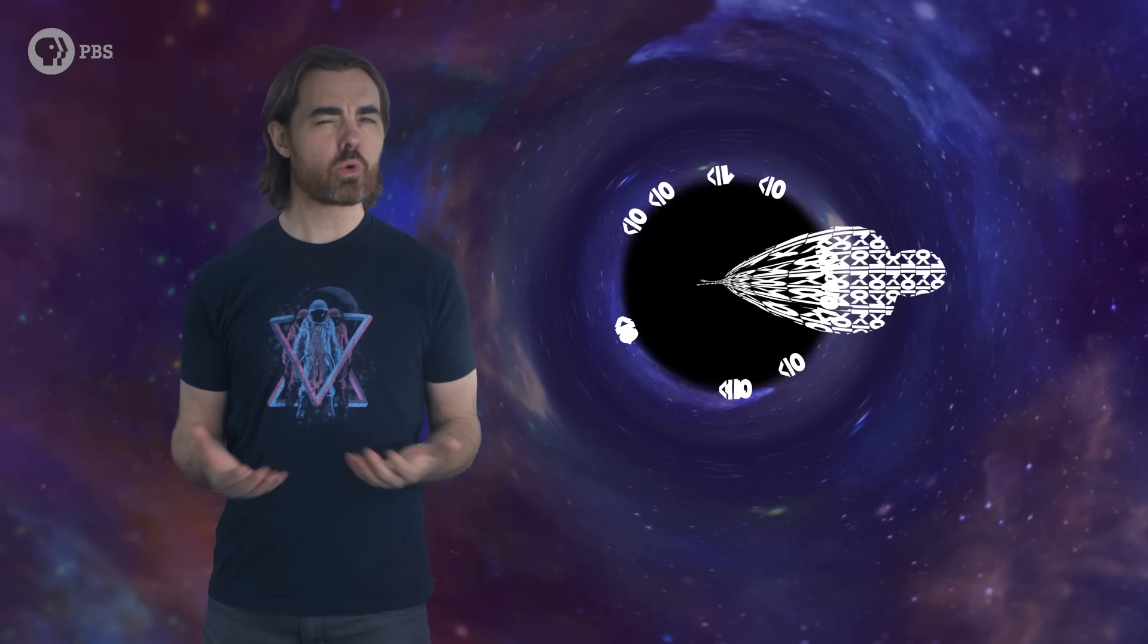From the point of view of outside observers, its contents are smeared into 2D on that surface. But from the POV of anyone falling in, they are definitely inside the black hole, plummeting to their doom in full 3D glory. This is the first glimpse of a holographic spacetime, a 2D surface that encodes the properties of the 3D interior.